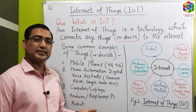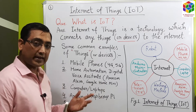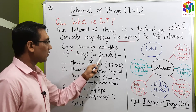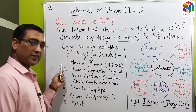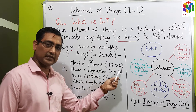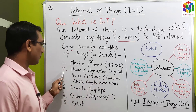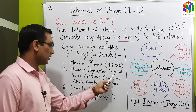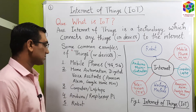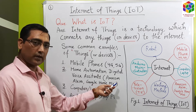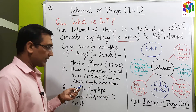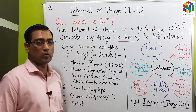Now, what are Things? Things are devices. Some common examples of devices: number one, mobile phone — that is, 4G and 5G wireless communication. Number two, home automation digital voice assistants. There are very popular home automation digital voice assistants: number one, Amazon Alexa; number two, Google Home Mini.